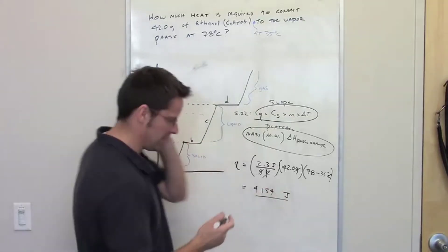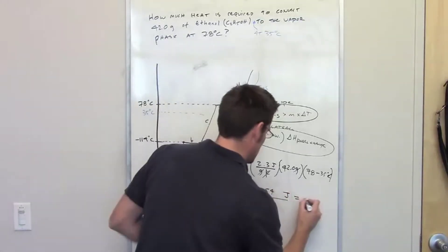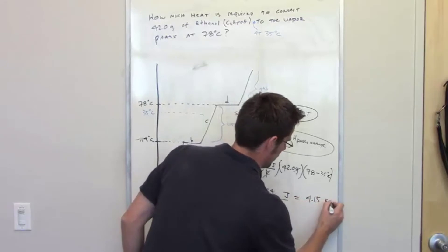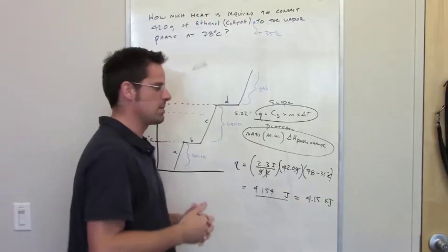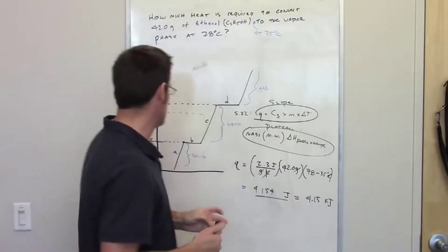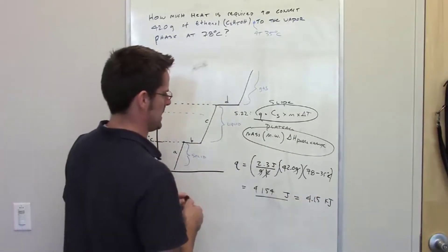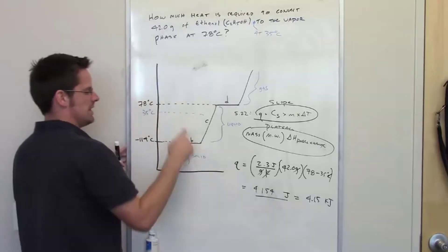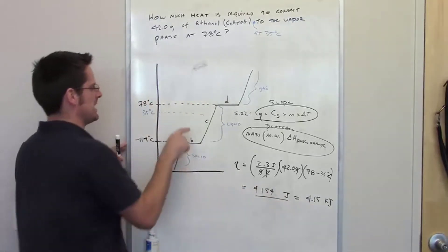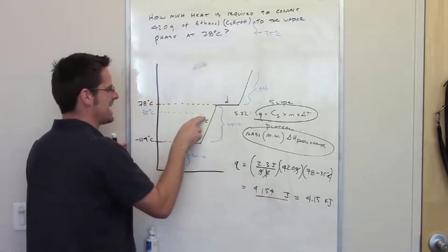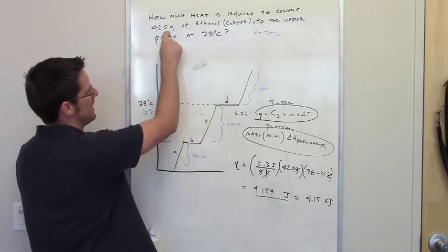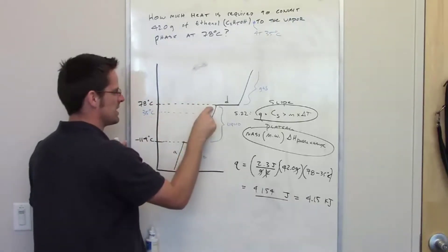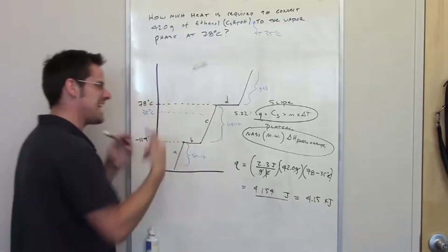Converting to kilojoules with three significant figures, that's 4.15 kilojoules — the energy required to raise 42 grams of ethanol from 35 degrees Celsius to 78 degrees Celsius. But we're not done yet.